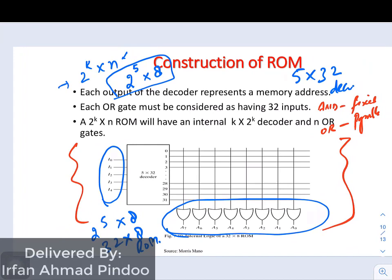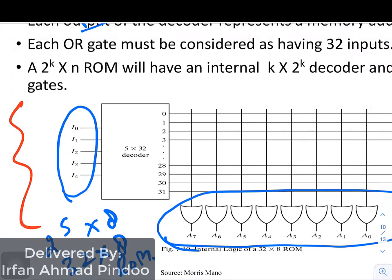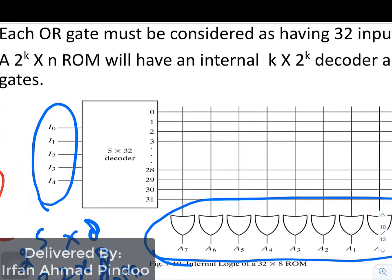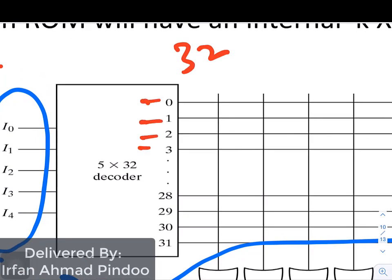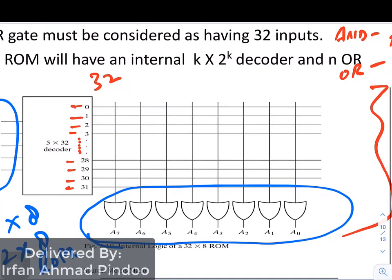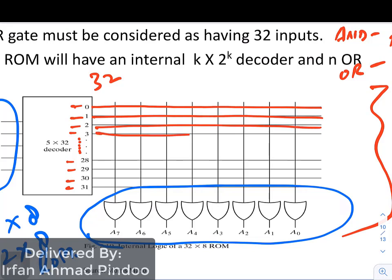Now this is the internal diagram of the decoder. So decoder means there are n number of inputs and there are 2 to the power n number of outputs. Now corresponding to 5 inputs there are 32 outputs. So you can see here all the lines are given 0, 1, 2, 3, then it continues and these are the last 4 states. Now what is important is you can see here these are all outputs connected. These all the lines are actually 32 lines up to this line.